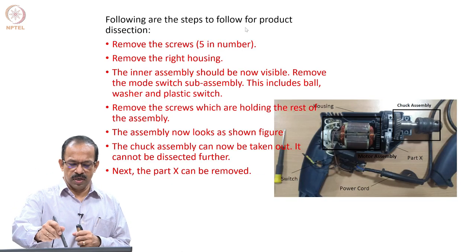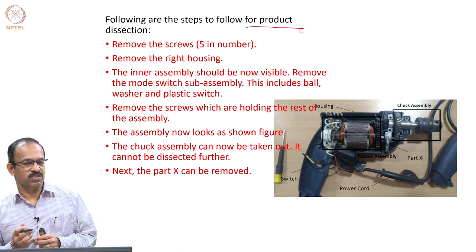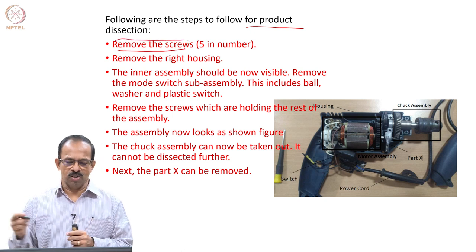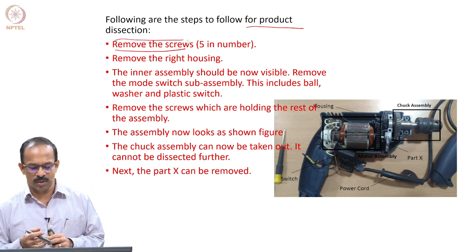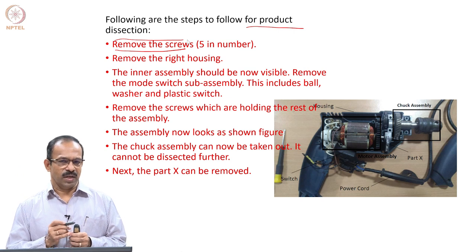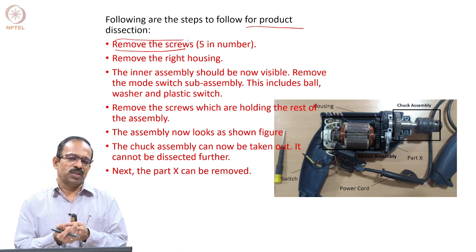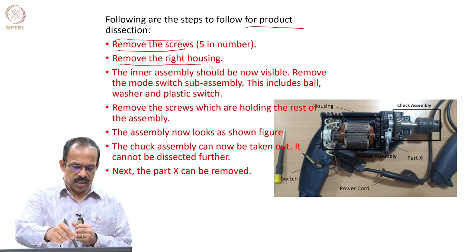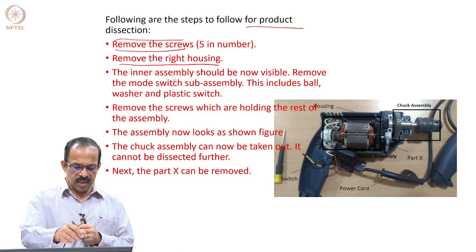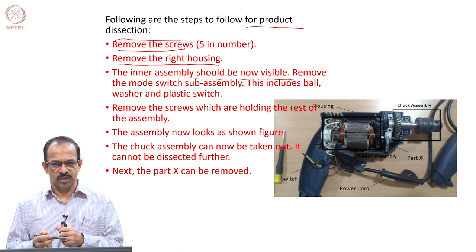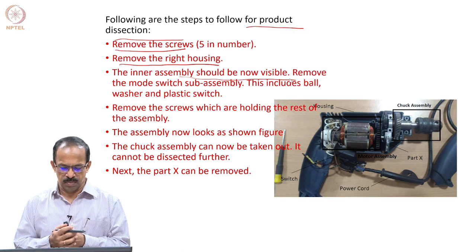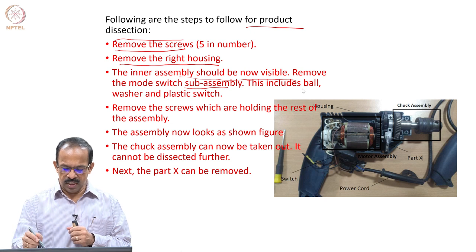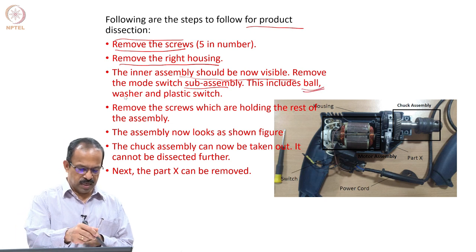The steps to be followed for product dissection: first, remove the screws — in this case there will be 5 screws visible on the product. Give each a number and put them in a small bowl so that you do not miss any. Then remove the housing — the right housing — and the inner assembly should be visible. After that, remove the mode switch sub-assembly, which includes the ball washer and plastic switch.